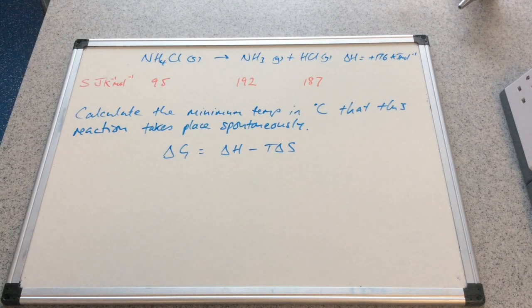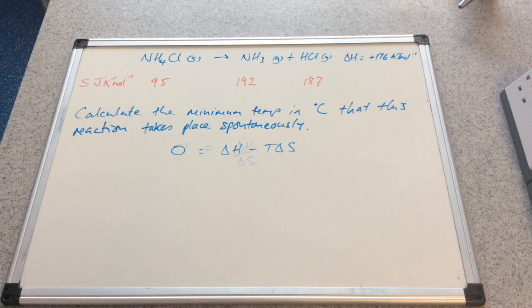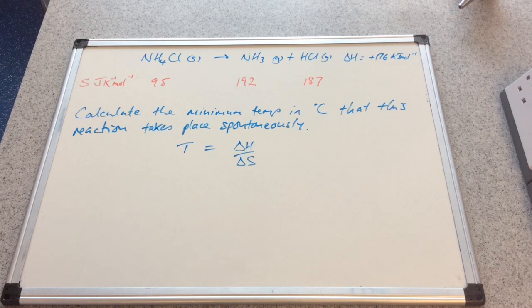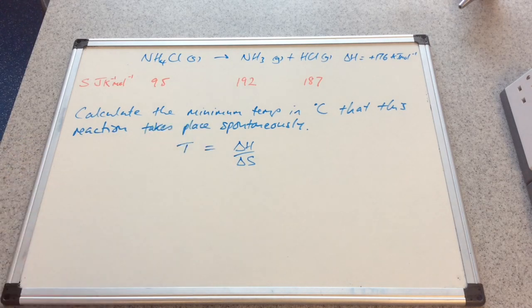So the first thing is to write up the Gibbs equation. The minimum temperature for this reaction to take place spontaneously is when delta G equals zero. We then rearrange for T, so T equals delta H over delta S, and all we need to do now is substitute the values for delta H and delta S into this equation and out we'll pop our temperature.